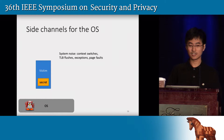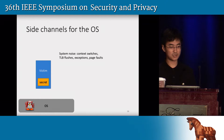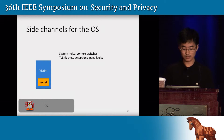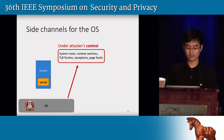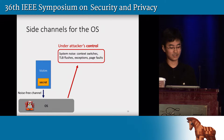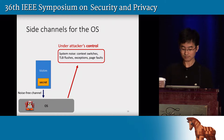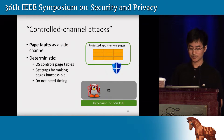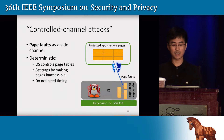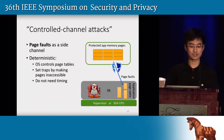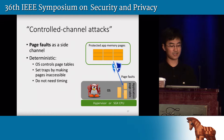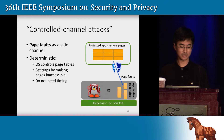In contrast, in our case, the attacker is the operating system. It controls all these system events. For this reason, it can leverage noise-free side channels from the victim. In particular, because the OS is still responsible for managing the page tables for protected applications, we use page faults as a side channel. The power of this side channel is that it is completely deterministic.